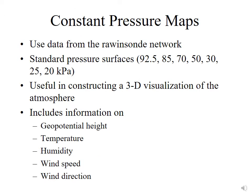Constant pressure maps are a way that we take a lot of data from radiosondes (rawinsondes) and synthesize it into a three-dimensional visualization of the atmosphere. It takes the upper air data and puts it onto standard pressure surfaces of 92.5 kPa, 85, 70, 50, 30, 25, and 20 kPa. On each of these pressure maps, we include information about the geopotential height, the temperature, the humidity, the wind speed, and the wind direction at that pressure surface.